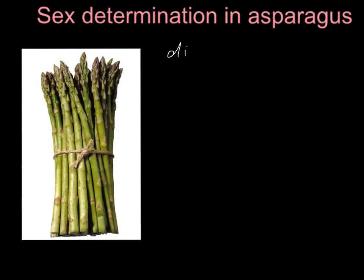Asparagus is dioecious plant and this means that it has two kinds of flowers, female flowers and male flowers, that are present on different kinds of plants. So one plant has only male flowers and another kind of plant has only female flowers.